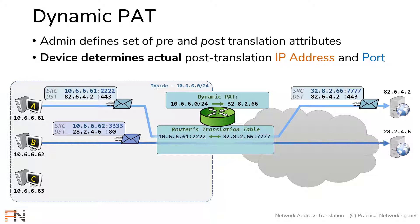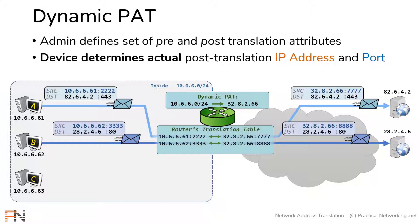When host B shoots out a packet, its source IP address is 10.6.6.2 and source port 3333. This matches our dynamic PAT configuration, and the router translates the source from 10.6.6.2 port 3333 to the shared IP address 32.8.2.66 and a new port of 8888. On the other side of the router, that's what the packet would look like.